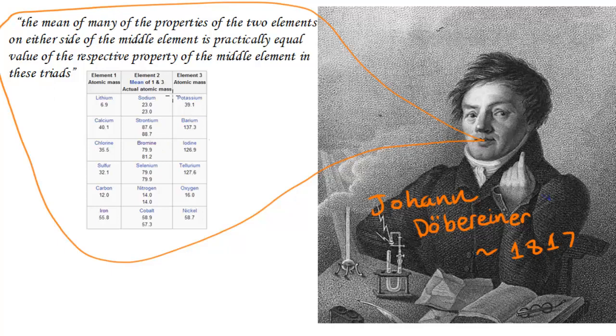What he did is he got the elements which they knew at that time and he noticed that there were groups of three. Here I've got a couple of these element groups: lithium sodium potassium, calcium strontium, and so on. He grouped them in terms of their similarities.